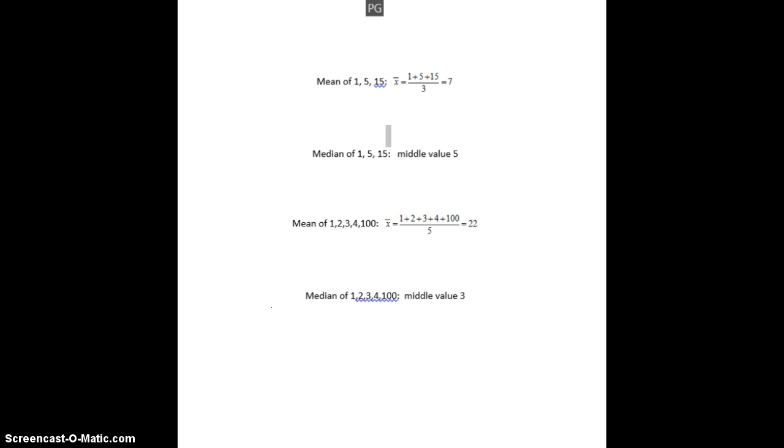The one that everybody would be familiar with is average or mean. We represent that with the symbol, as you see here, X bar. That's an X with a bar over it. How do you get the mean or the average? You simply add up the data values and divide by the number of data values. For example, we have the numbers 1, 5, and 15. To get the mean or the average, add them together, divide by 3, and that is 7.